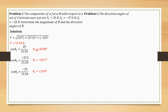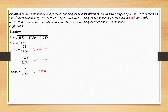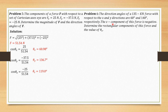For the next problem: the direction angles of a 135 kN force with respect to the X and Y directions are 60 degrees and 140 degrees respectively. The Z component of this force is negative. Take note: the Y component is also negative because the direction angle with respect to Y is more than 90 degrees. Only the X component is positive.